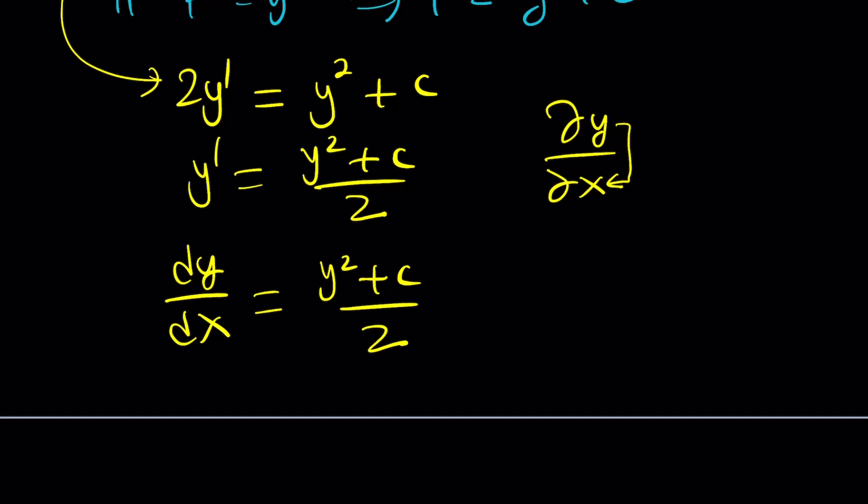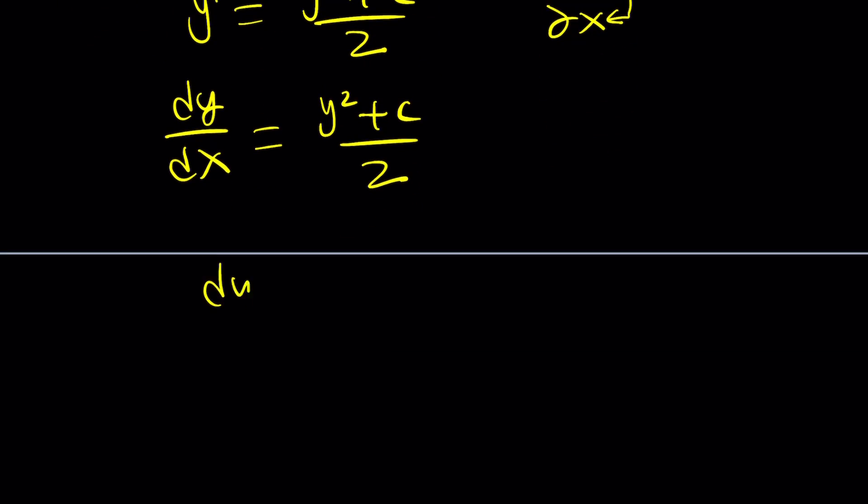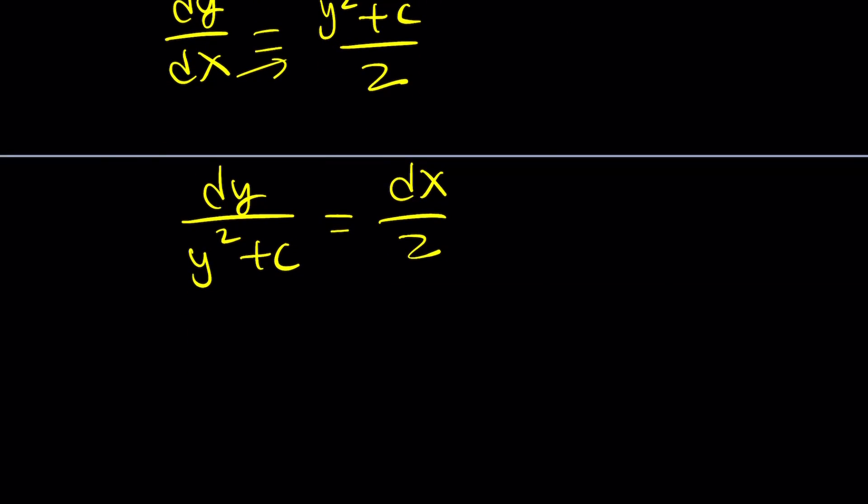This is separable because go ahead and divide both sides by y squared plus c. In other words, bring it over to the left and put the dx on the right-hand side and you'll get the following. And yes, we can integrate both sides. I mean, you know what I'm talking about. I mean, I meant integrate.